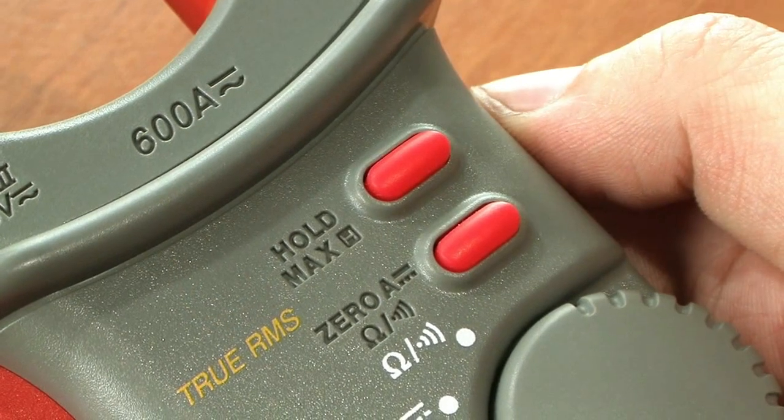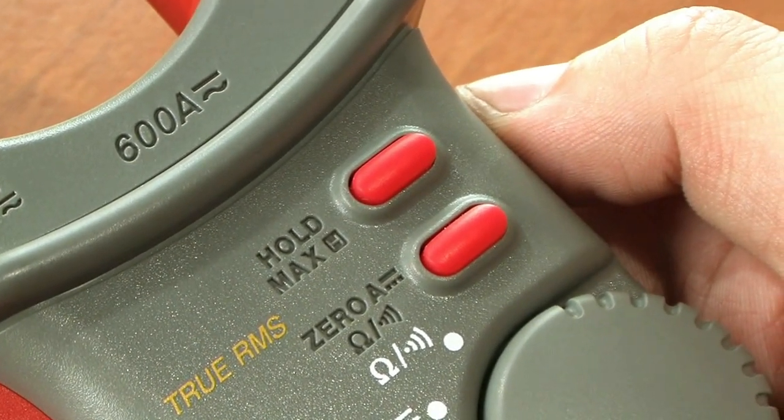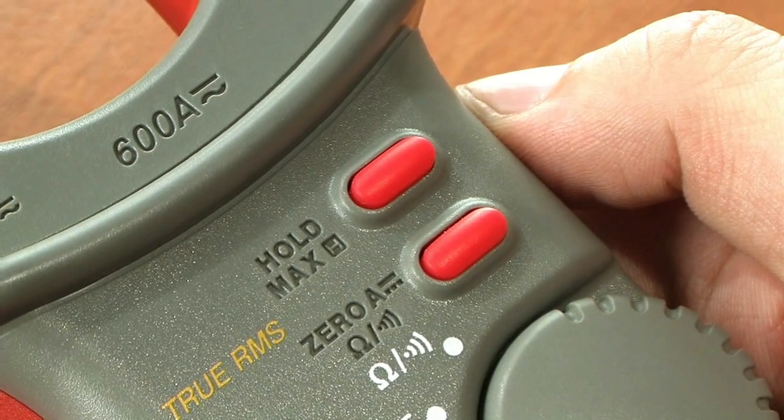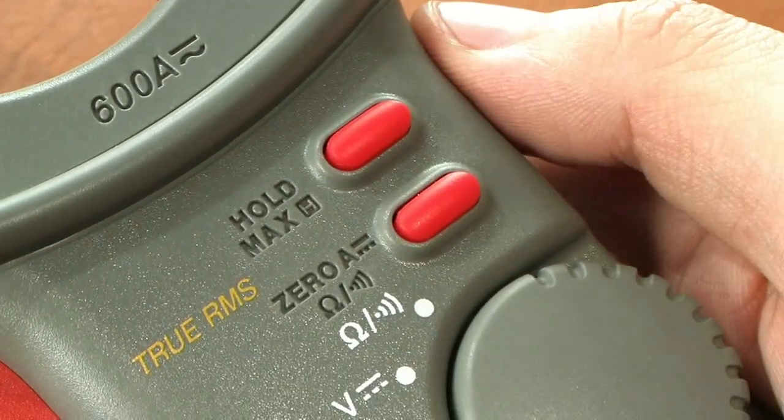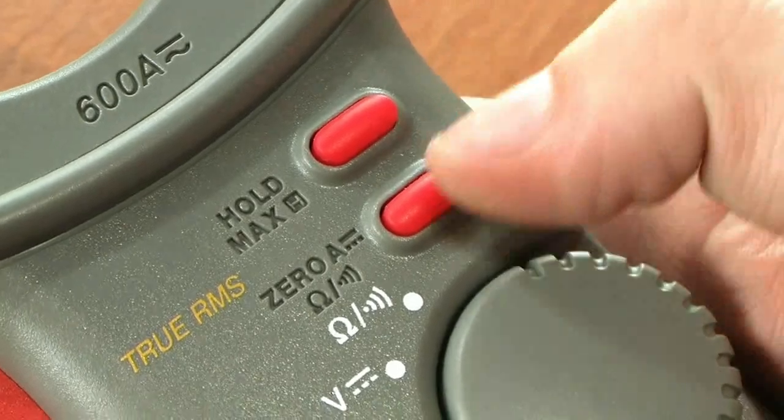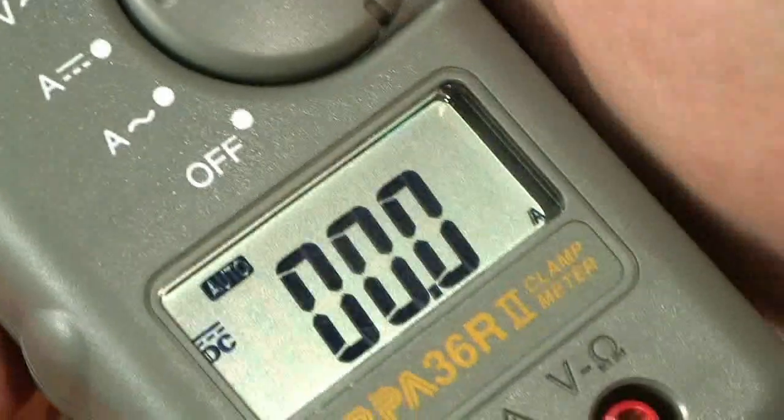Additional functions are holding current and maximum metering value by pressing hold max button, as well as automatic zero setup by pressing zero button when measuring direct current. The device is able to withstand drops for more than 2 meters.